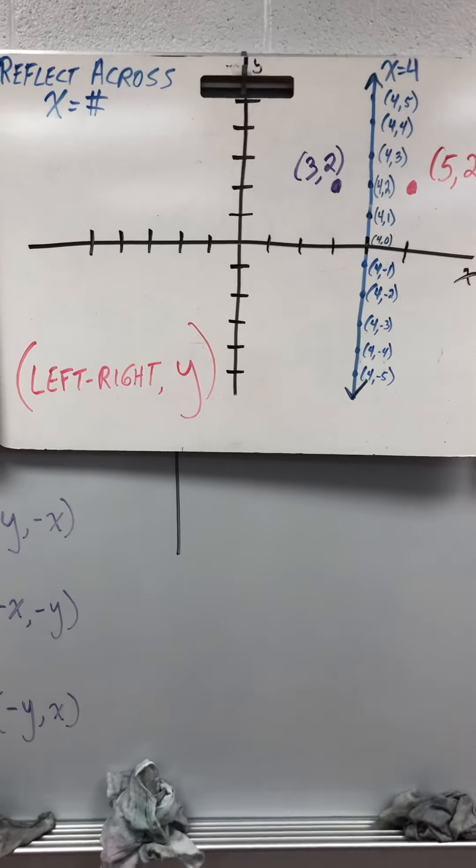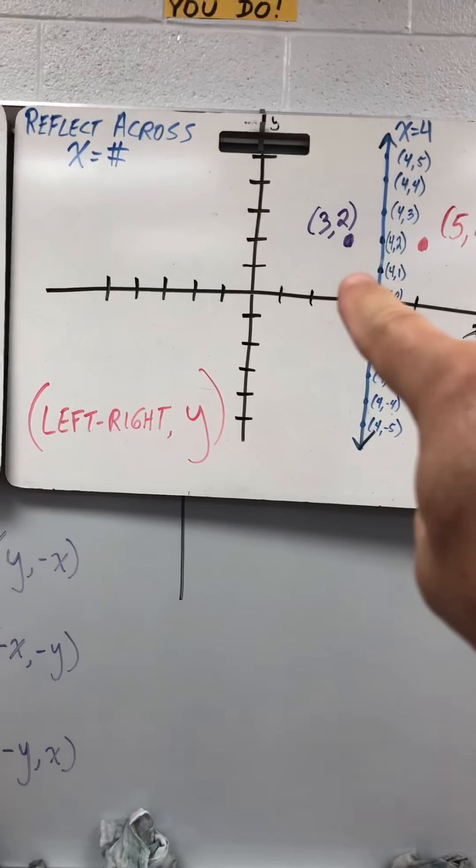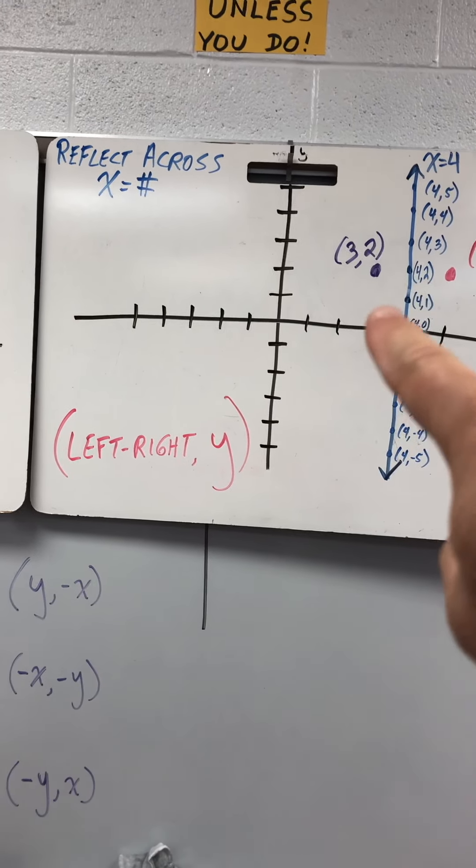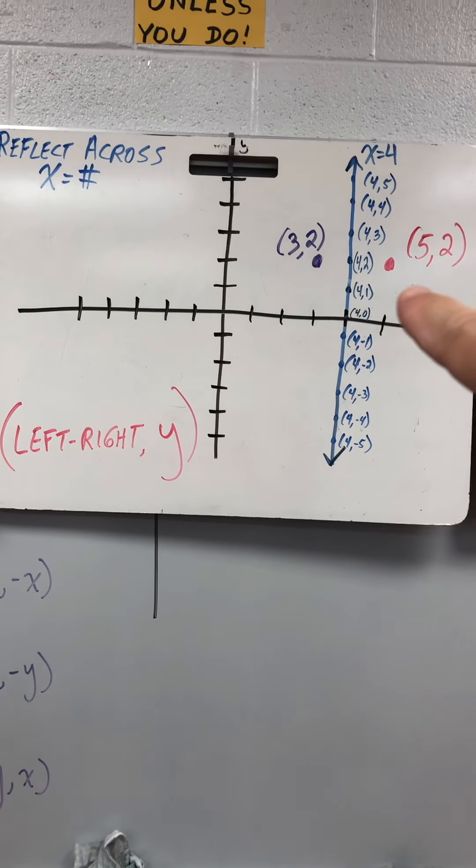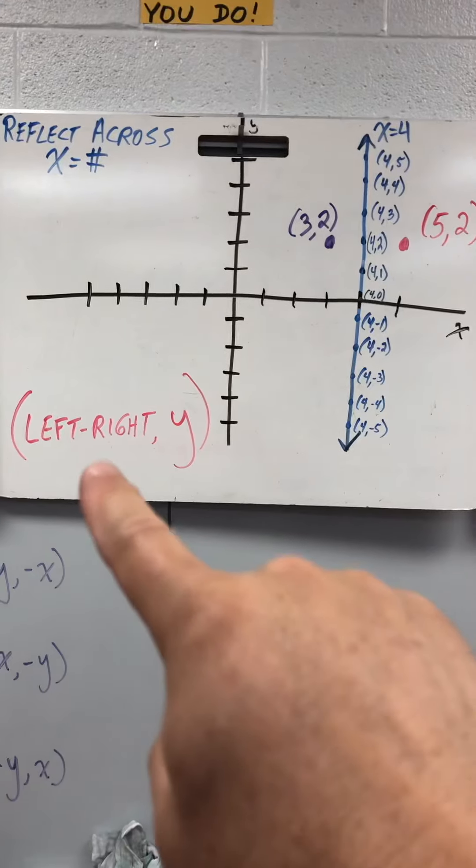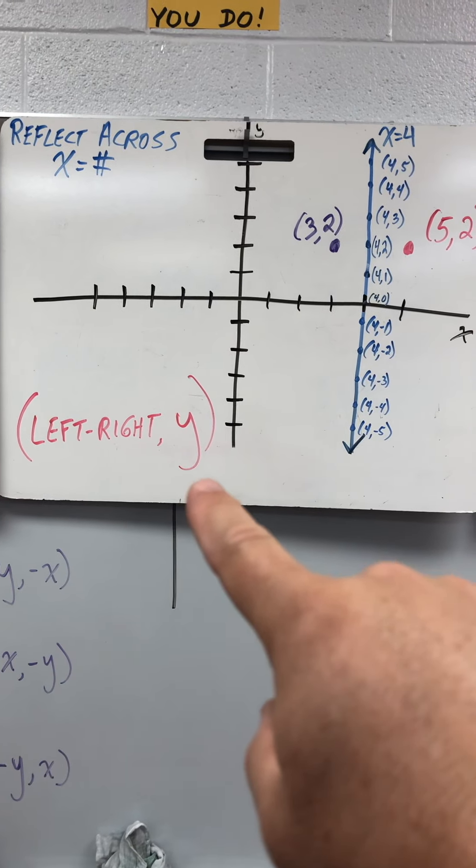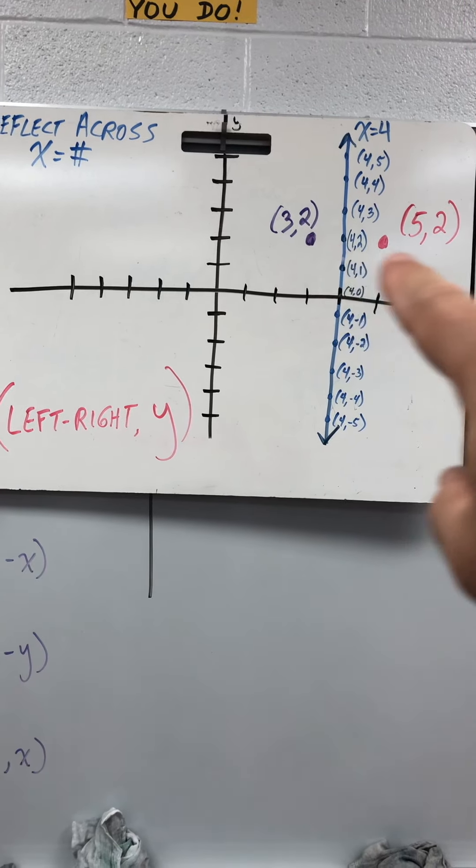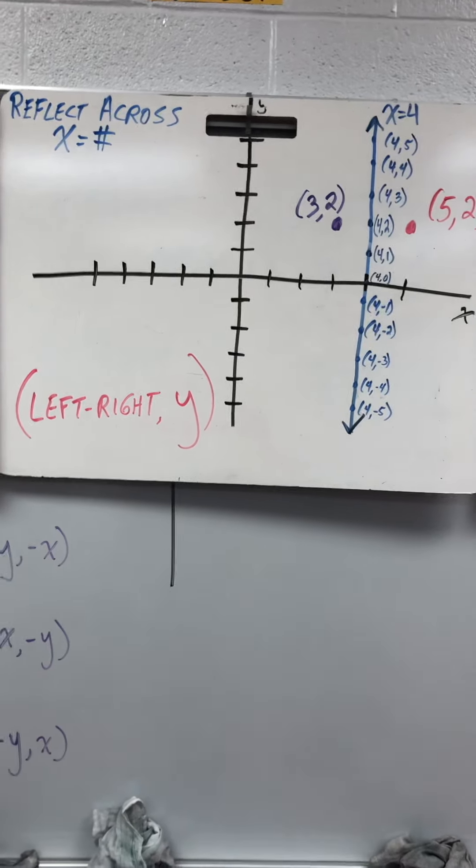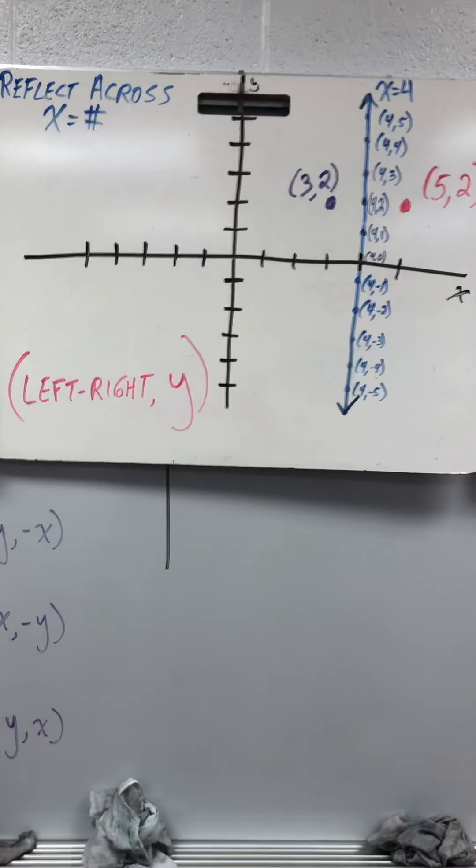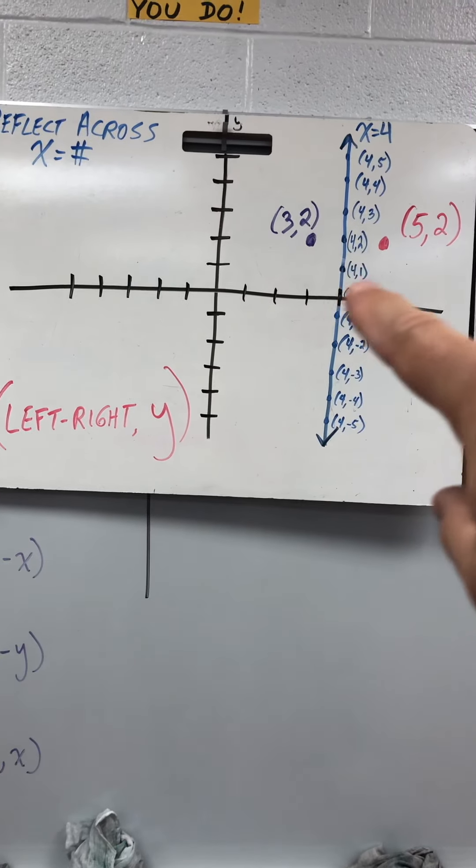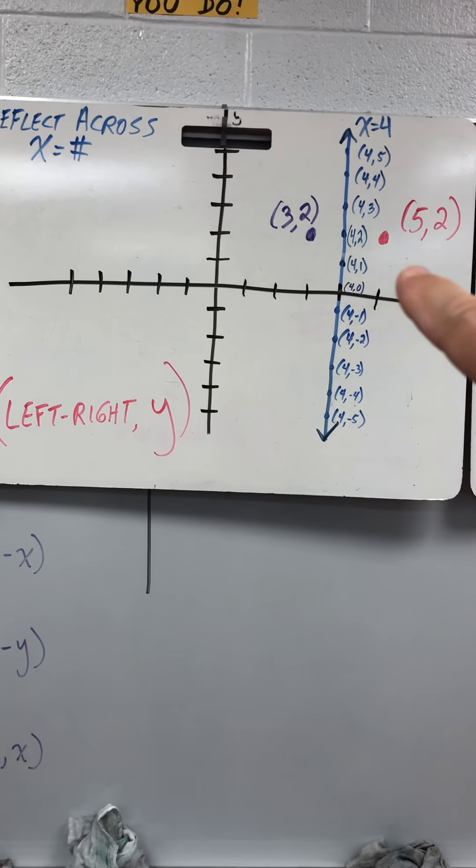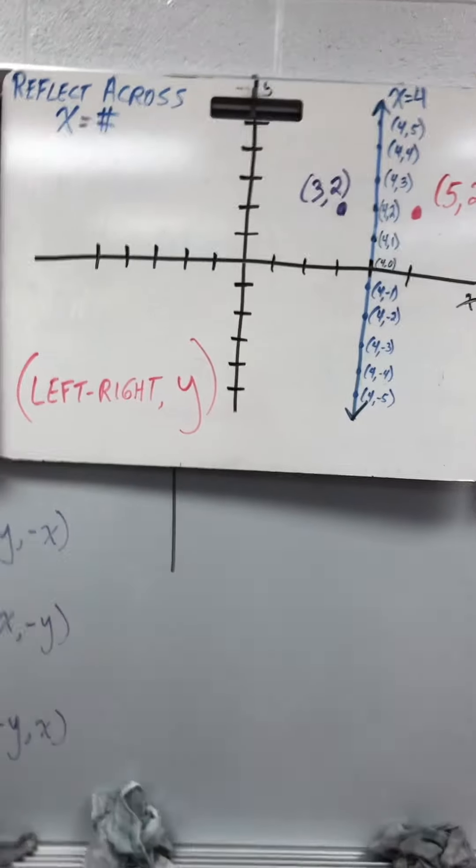So if the original point, 3, 2, is 1 to the left of the line, the reflection will be 1 to the right of the line. I call that left-right y. Notice how the y value stays the same. And if you have an original point that's 1 to the left, then the reflection will be 1 to the right, left-right. Okay?